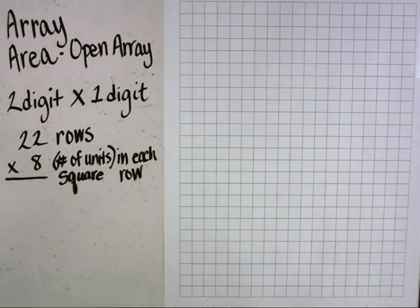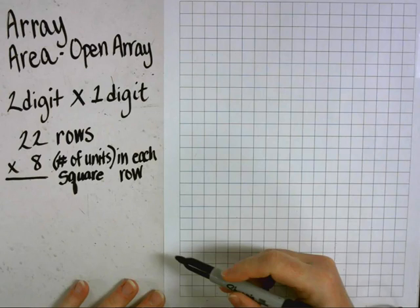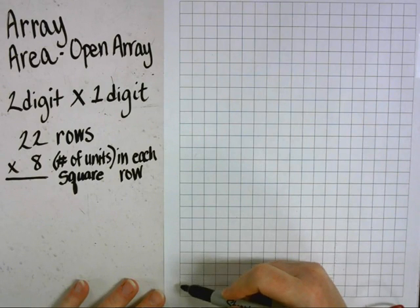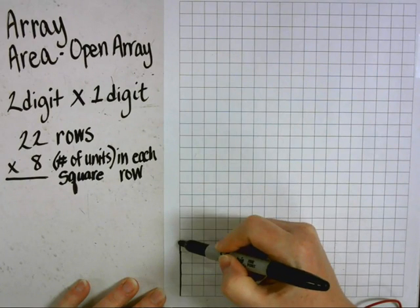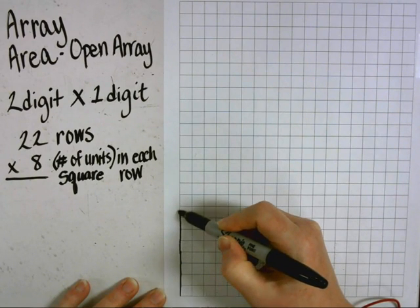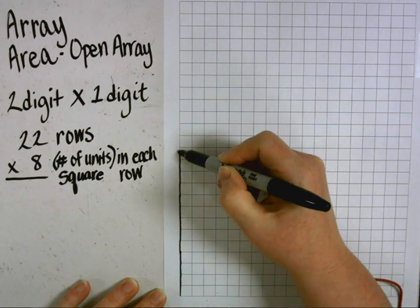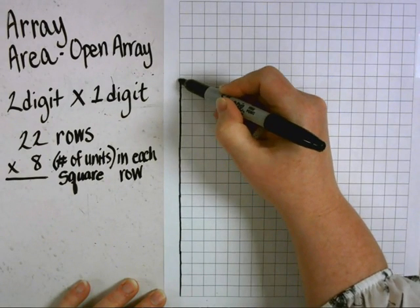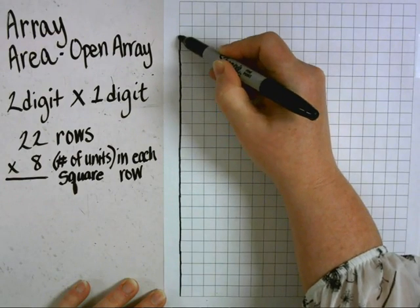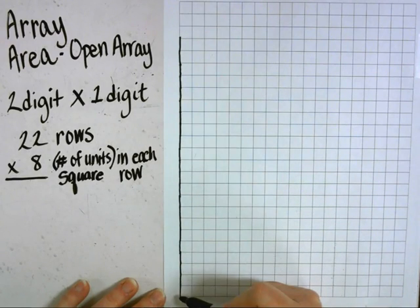I'm going to get started by creating the array. I'm going to start with my 22 rows, so I'm going to count up 22: 1, 2, 3, 4, 5, 6, 7, 8, 9, 10, 11, 12, 13, 14, 15, 16, 17, 18, 19, 20, 21, 22. I now have the dimension for one of my factors, which is 22.